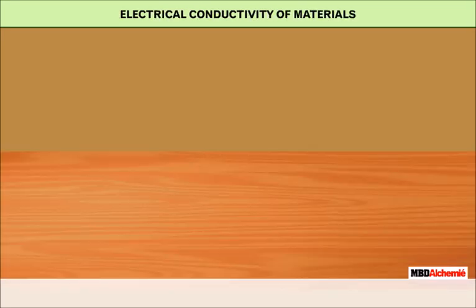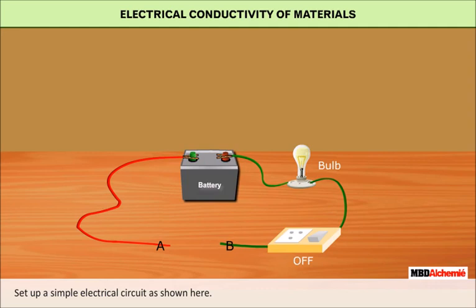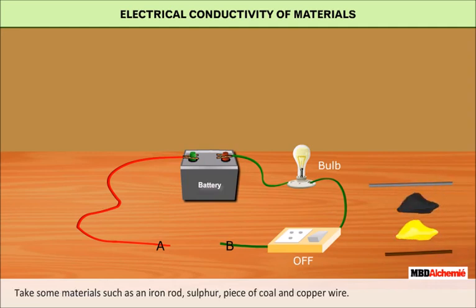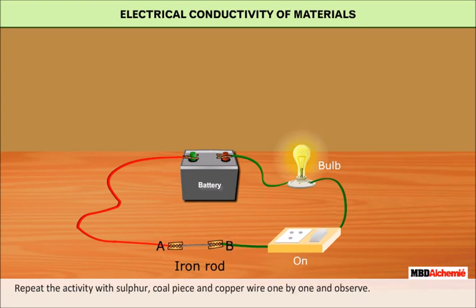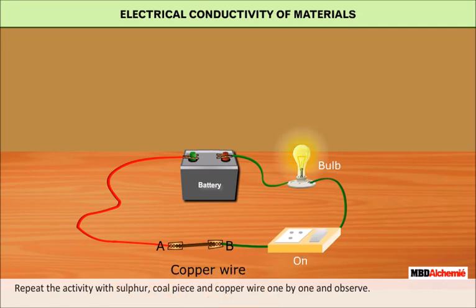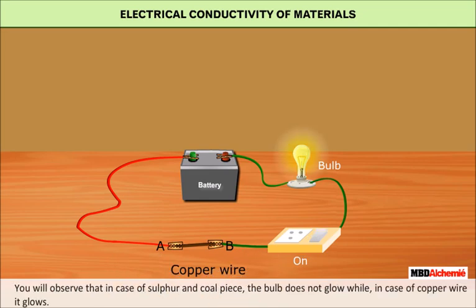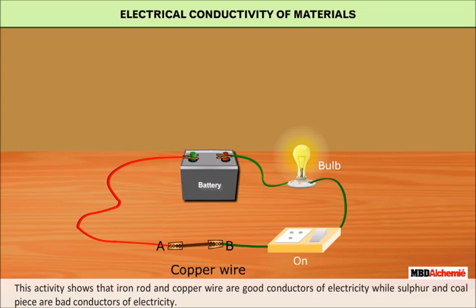Let us do an activity to demonstrate electrical conductivity of materials. Set up a simple electrical circuit. Take some materials such as an iron rod, sulfur, a piece of coal, and copper wire. Hold the iron rod with the help of crocodile clips between the terminals A and B — the bulb glows. Repeat the activity with sulfur, coal piece, and copper wire one by one. You will observe that in case of sulfur and coal piece the bulb does not glow, while in case of copper wire it glows. This activity shows that iron rod and copper wire are good conductors of electricity, while sulfur and coal piece are bad conductors of electricity.